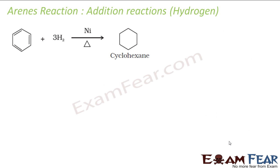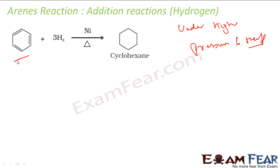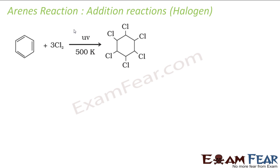Now we will talk about addition reactions — addition of hydrogen. Since benzene is more stable than cyclohexane, this is not an easy process. It has to be done under high temperature and high pressure. You need to add 3 H2 in the presence of nickel under very high temperature and pressure. Similarly, addition of halogens also occurs. This gives benzene hexachloride, also called lindane, which is an insecticide. You have to add chlorine molecules in the presence of sunlight at very high temperature because benzene is more stable.